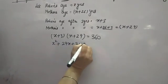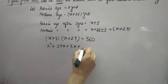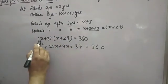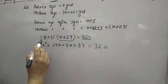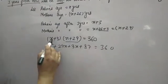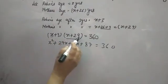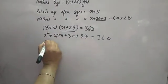So 29 into 3 gives 87 equal to 360. I first multiplied this whole term by X. X into X is X square, X into 29 is 29X, 3 into X is 3X, 3 into 29 is 87 equal to 360. Now,